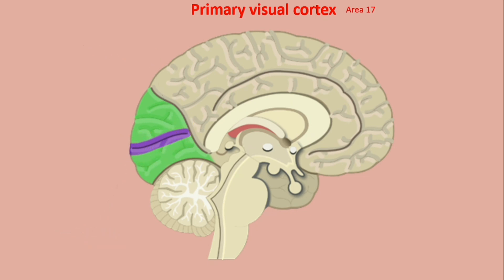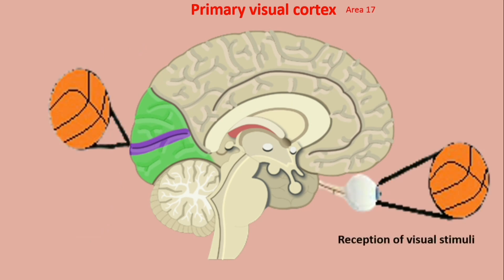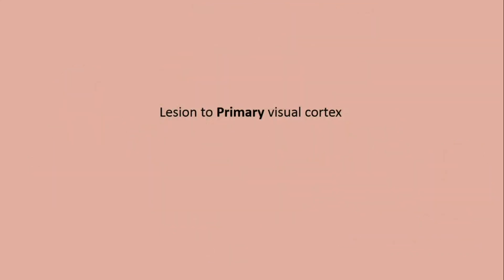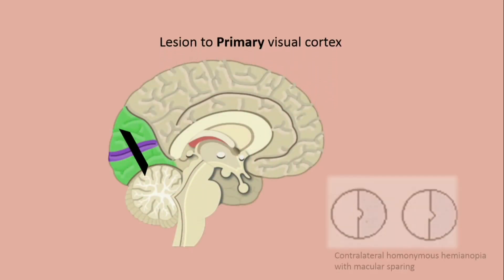The primary visual cortex is responsible for reception and interpretation of visual stimuli and also projects them to other areas. A lesion to the primary visual cortex leads to contralateral homonymous hemianopia with macular sparing.